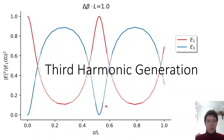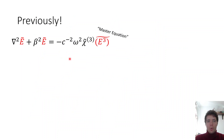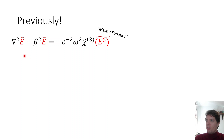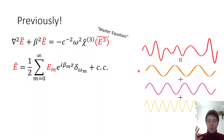Welcome to this video on third harmonic generation and cross phase modulation. In a previous video, which I'll be referring to extensively, I derived a master equation which explains how the spectrum of an electric field changes as it propagates through a medium with a chi3 nonlinearity. The solution approach was to express the spectrum as an infinite sum of discrete frequency components, model their evolution individually, and then add them together to get the total spectrum evolution.